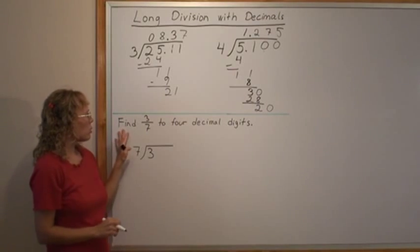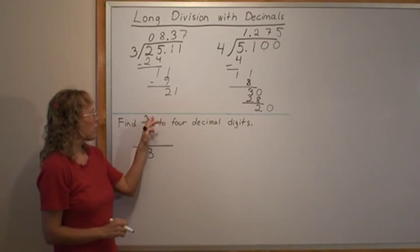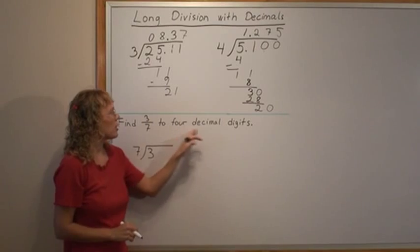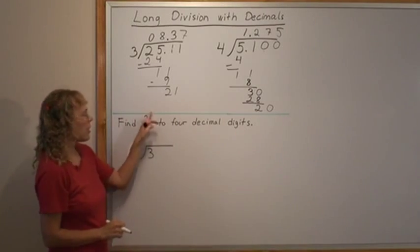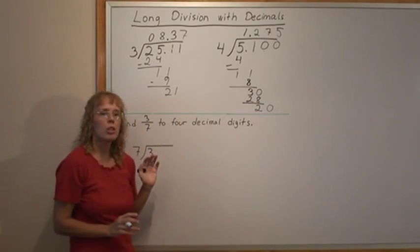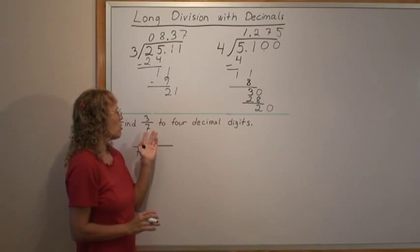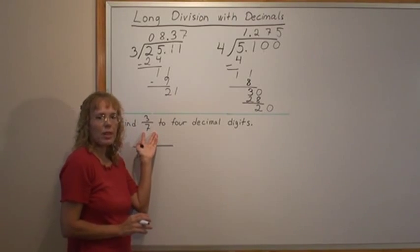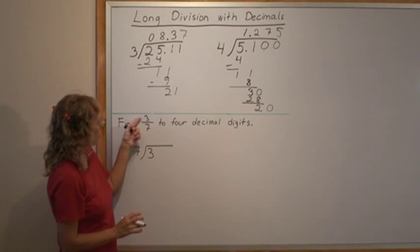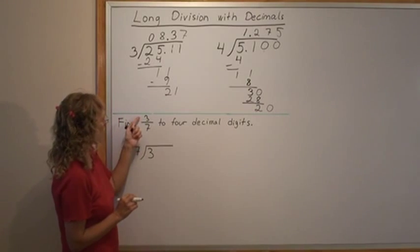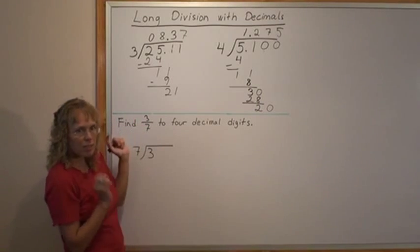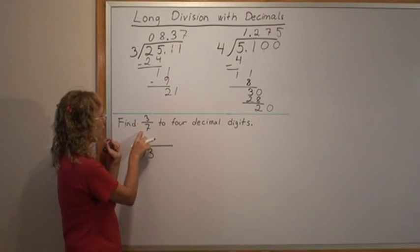My last example has to do with finding 3/7 to 4 decimal digits. 3/7 is a fraction and we are going to use long division to write this fraction as a decimal. Remember, a fraction is a division problem because 3/7, it is like this fraction line is a division symbol. 3 divided by 7.